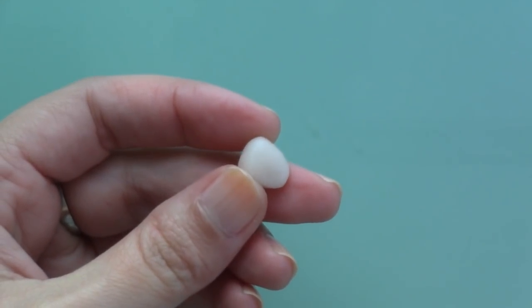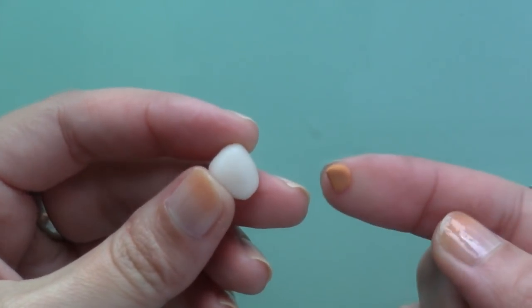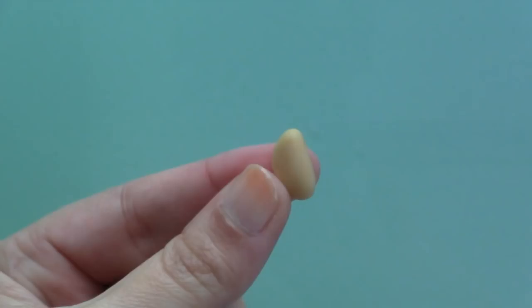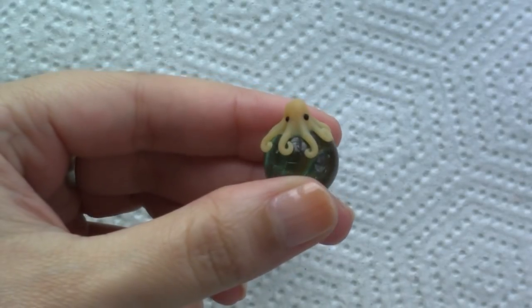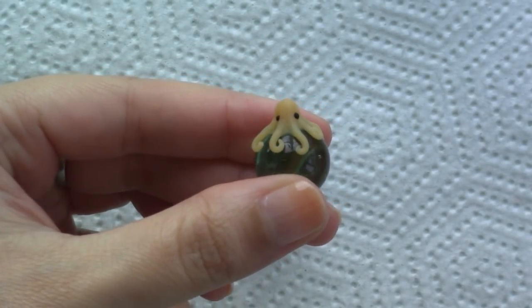If you'd like to add color to your octopus but still keep it translucent, just add a small amount of clay in your favorite color and do everything as before. I've just given this one smaller eyes.